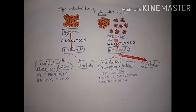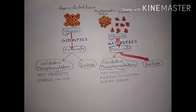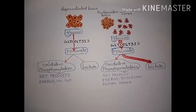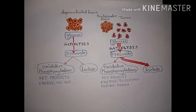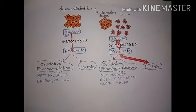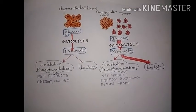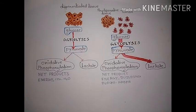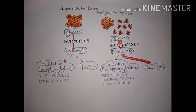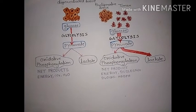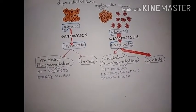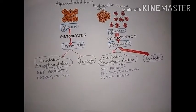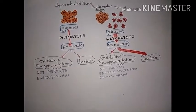Tumor cells mainly produce lactate even in the presence of oxygen. In contrast, normal cells do not produce lactate when enough oxygen is provided. But when oxygen-deprived conditions occur, the normal cell produces lactate. That lactate is transported to the liver through the blood, and ultimately in the liver, lactic acid is transformed into glucose, which then re-enters the blood.